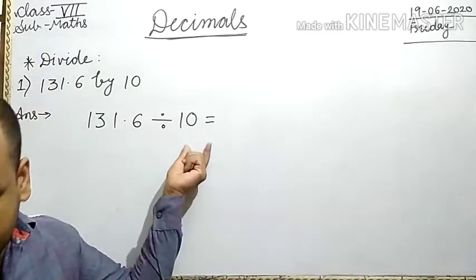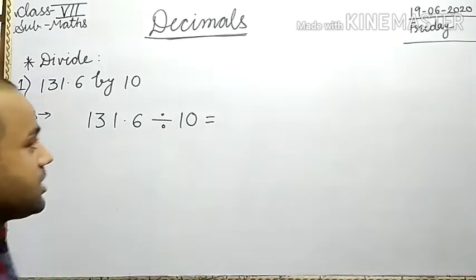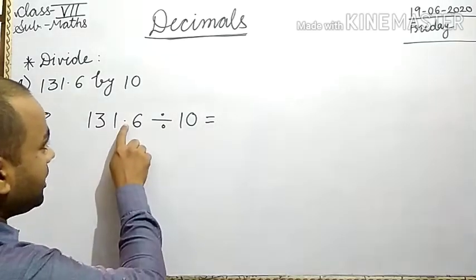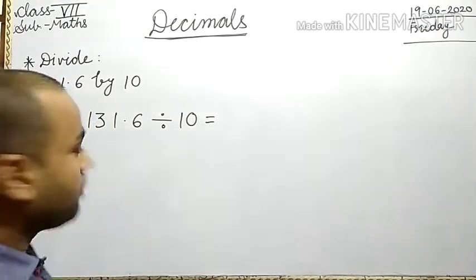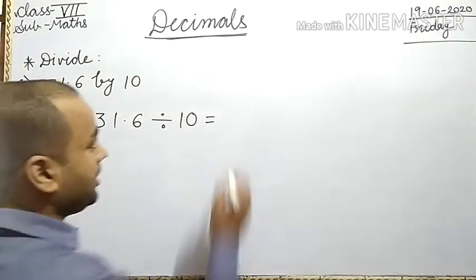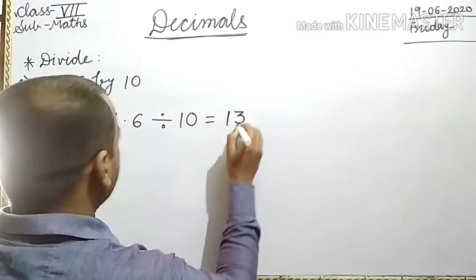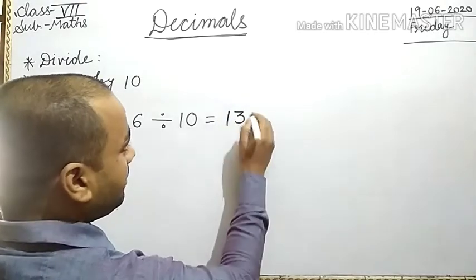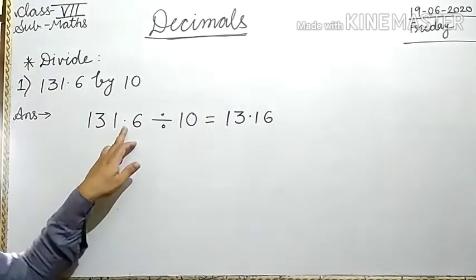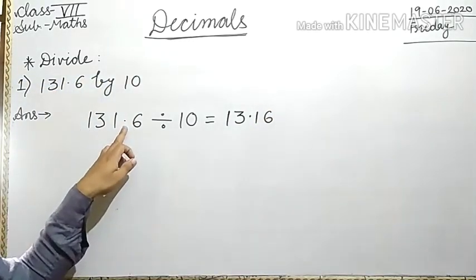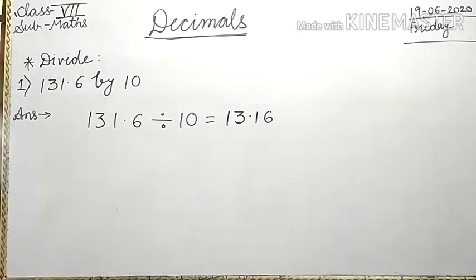When divided by 10, shift the decimal point to the left by one place. So 131.6 divided by 10 equals 13.16. The decimal point shifts to the left by one place when divided by 10.